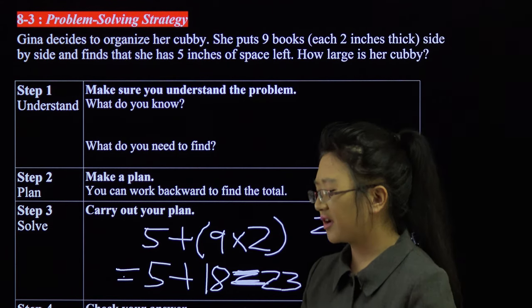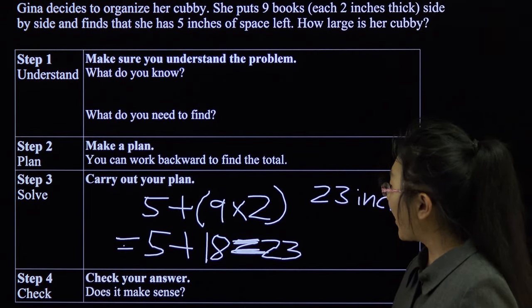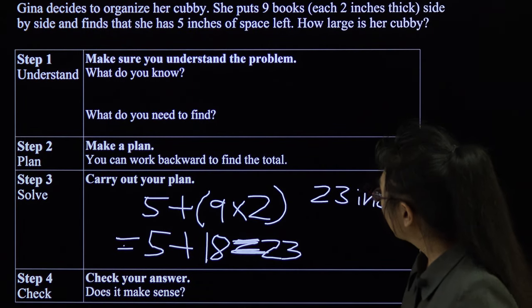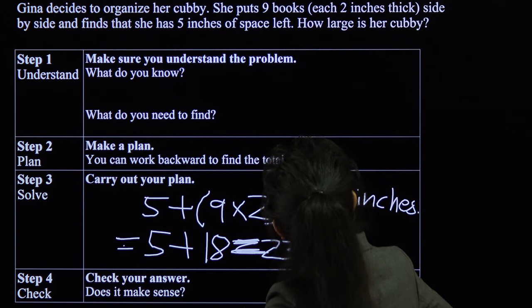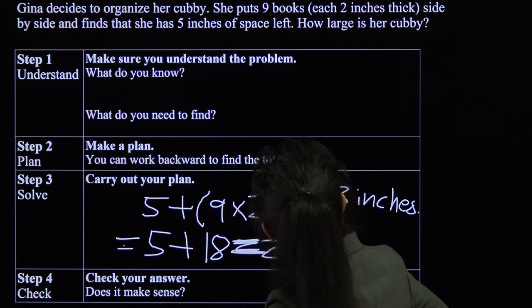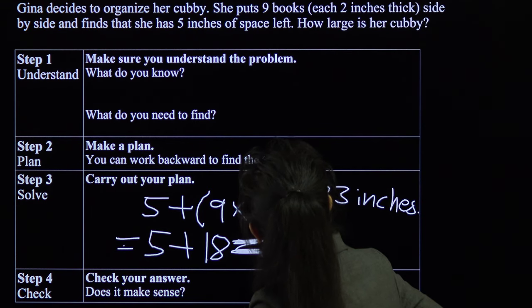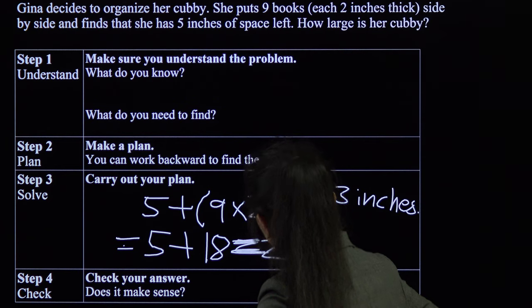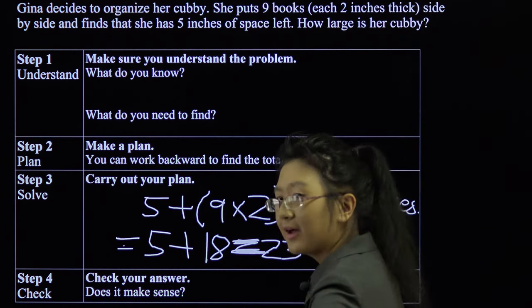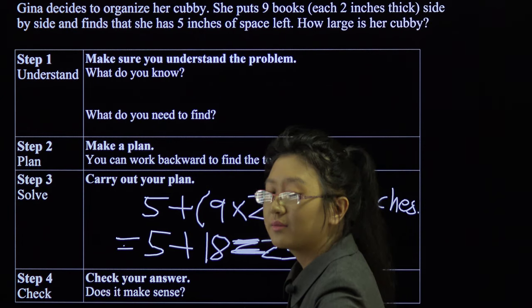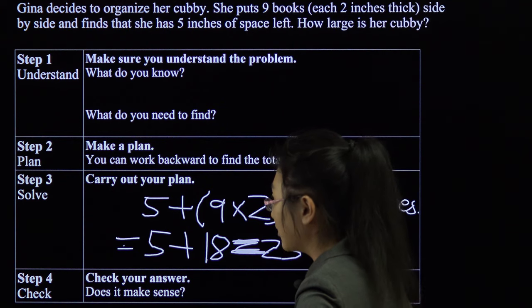That's an equal sign, not a two. Twenty-three inches. Her cubby was twenty-three inches. That's not that big. It's also not that small. Check our answer. Does it make mathematical sense? Reread the question. Nine books, two inches thick. All of them, each two inches thick. Side by side. Find that she has five inches of space left. And our calculations are correct. So yeah. It makes sense. Mathematically. Logically, I mean, it's a cubby. It shouldn't be too big, either.